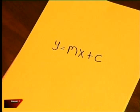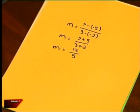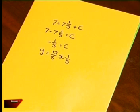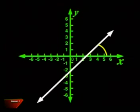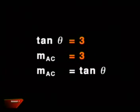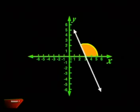Let's look at what we've learnt in this lesson. The equation of any straight line has the form y equals mx plus c. We can work out the equation of a line if we know the coordinates of two points on the line — we use them to find m, the gradient. Then we substitute the coordinates of one of the points into the equation, which gives us the value of c. We also discovered that the gradient of a line is equal to tan of the angle of inclination. Lines with a negative gradient will have an obtuse angle of inclination.